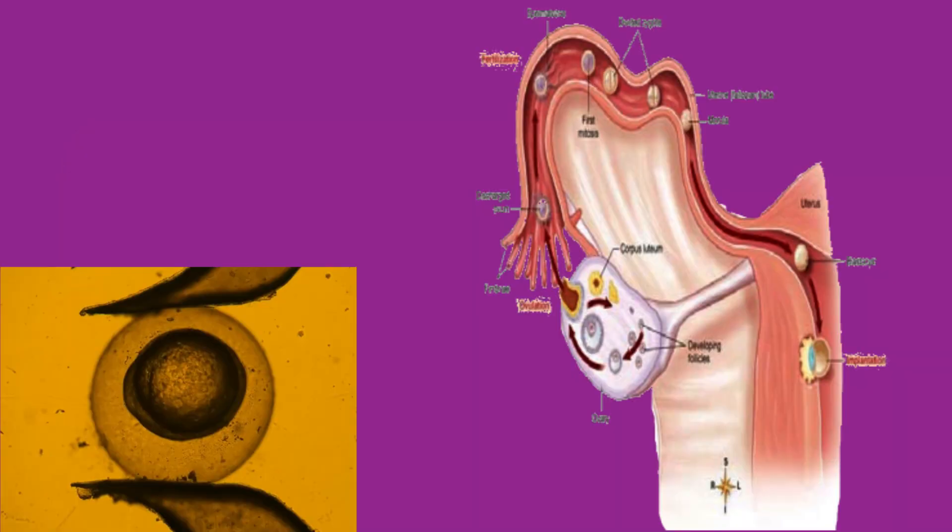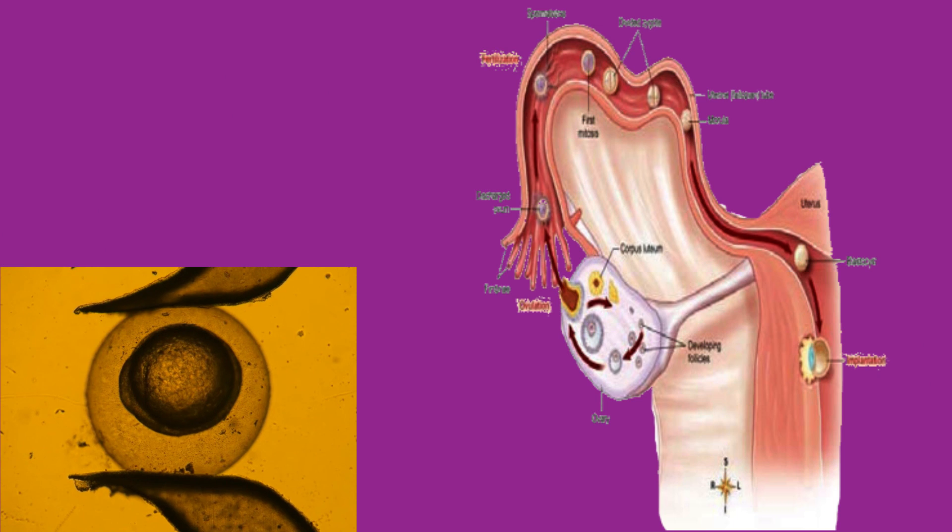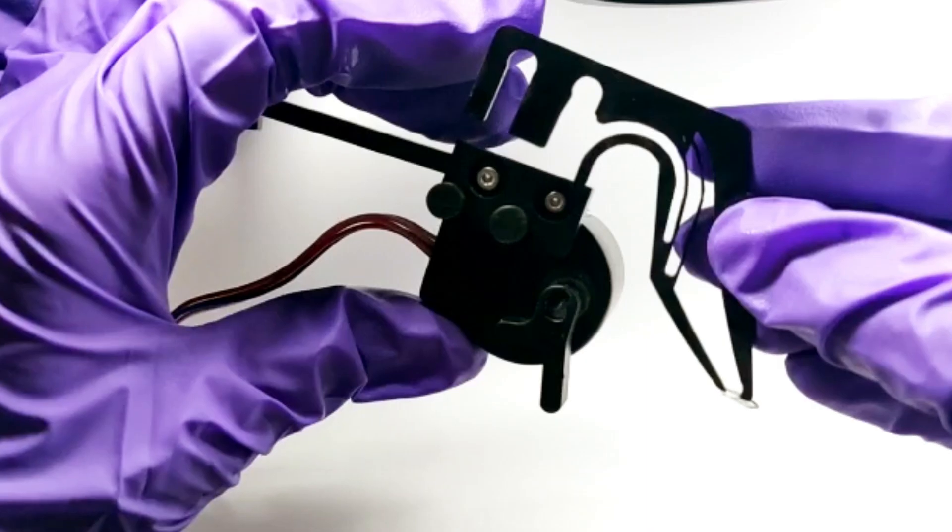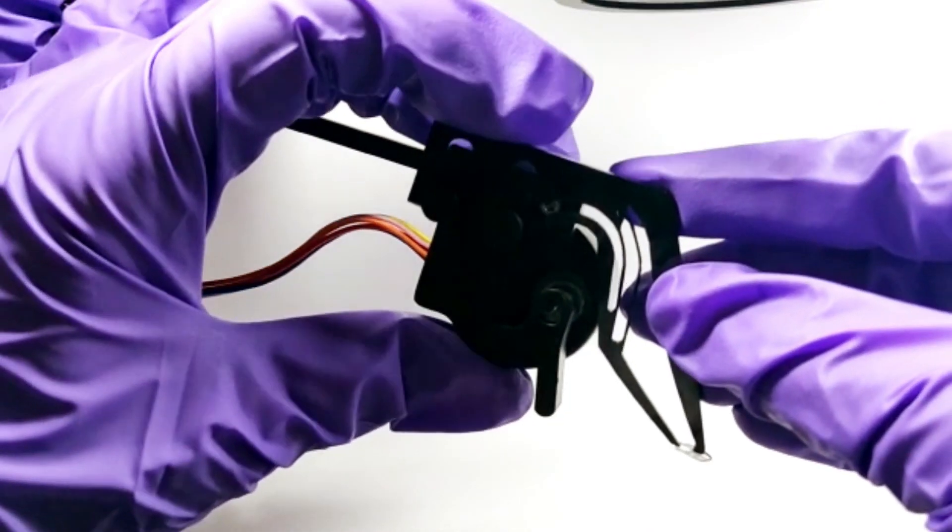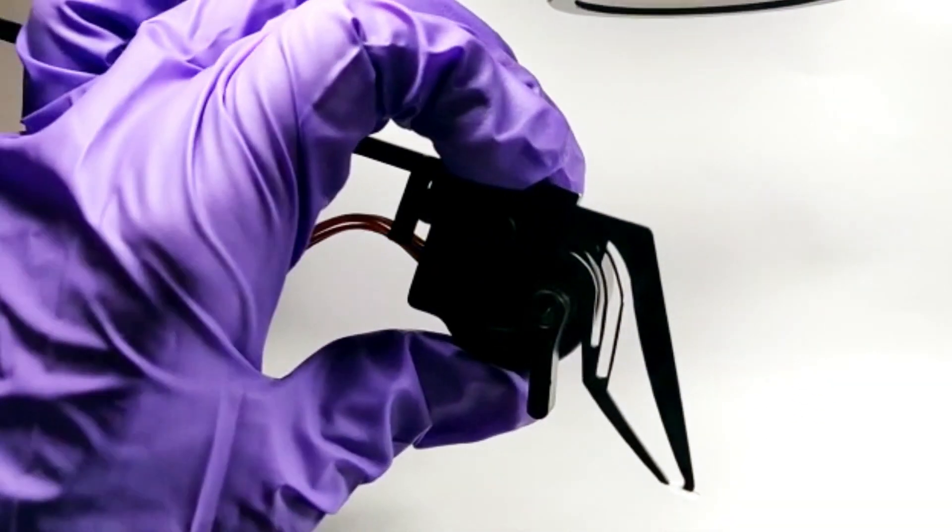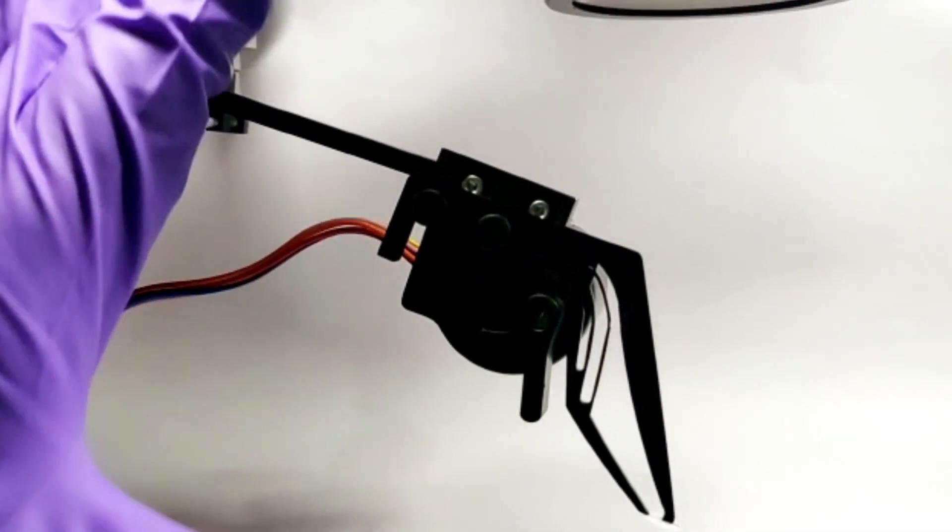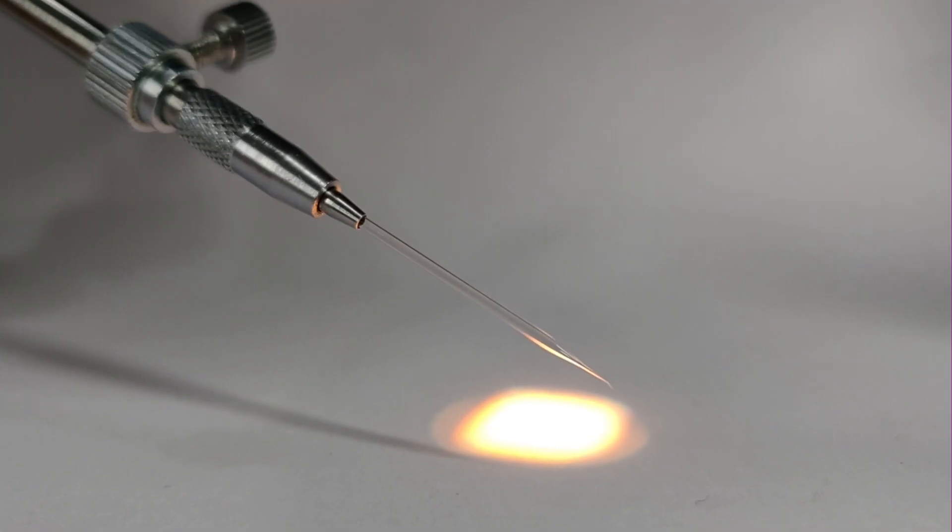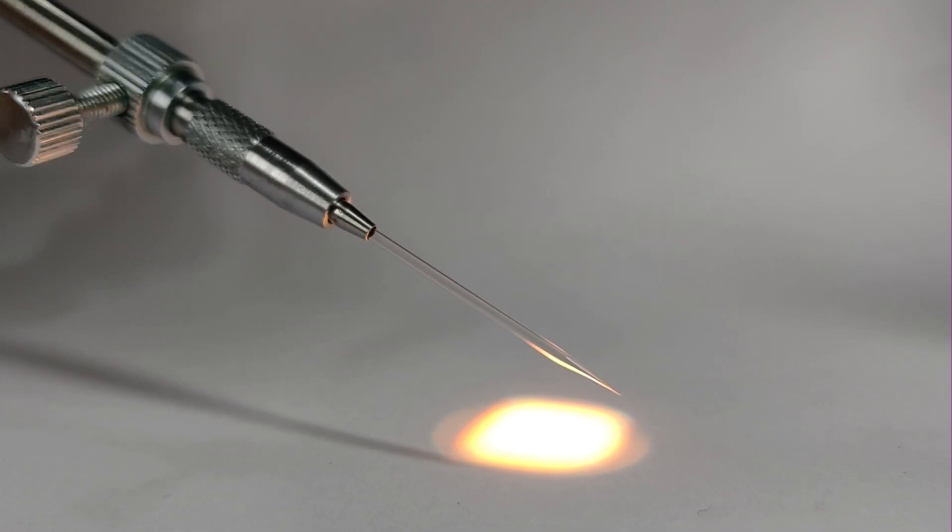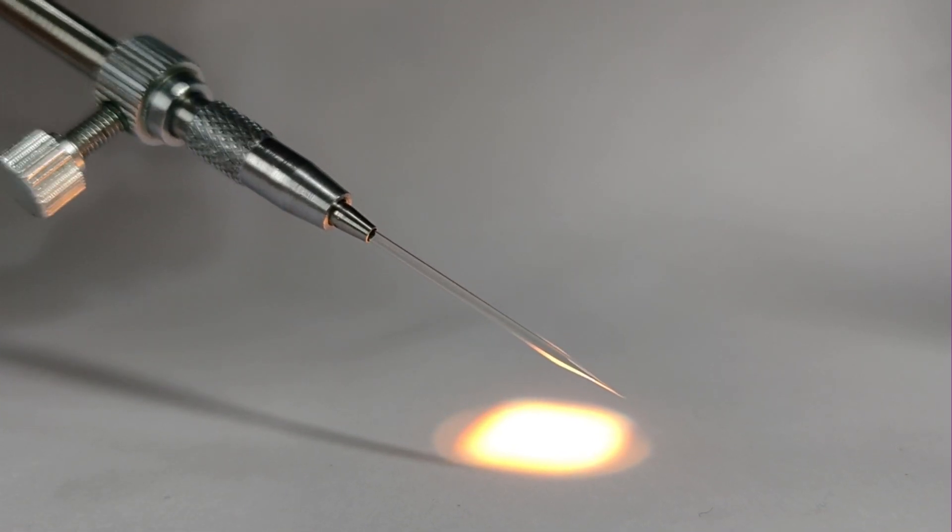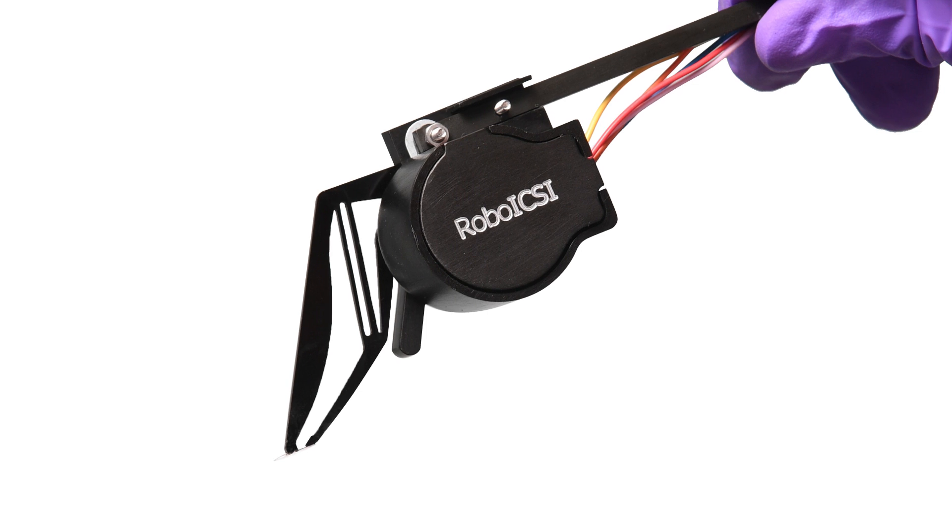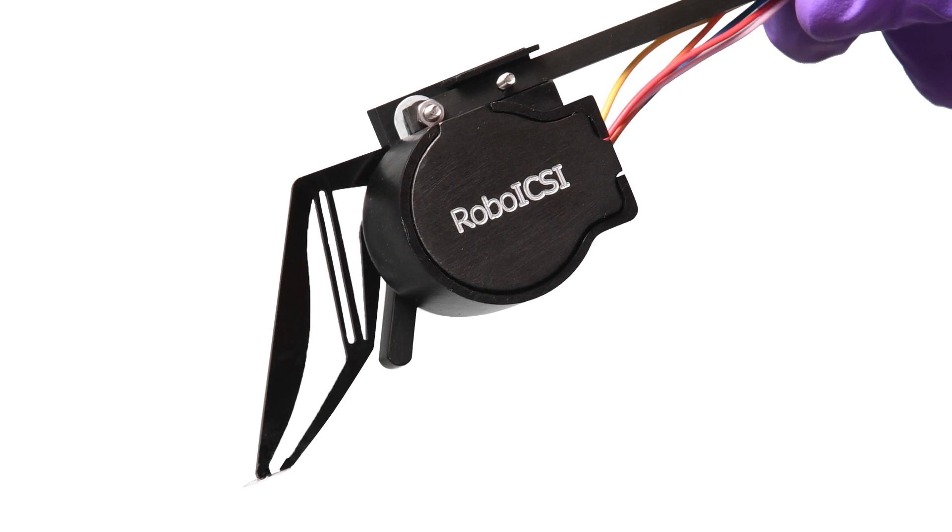First, it holds the oocyte as gently as it happens inside a mother's body. Embryologists need not worry about orienting the holding pipette because the Robo-ICSI holder is self-orienting. While using holding pipettes, embryologists need to be careful. But Robo-ICSI goes beyond and is full of care.